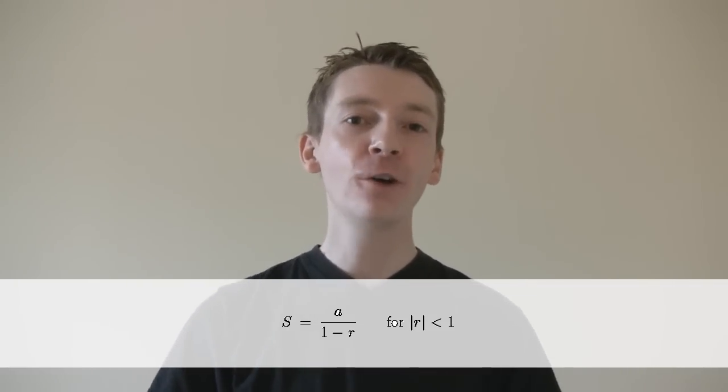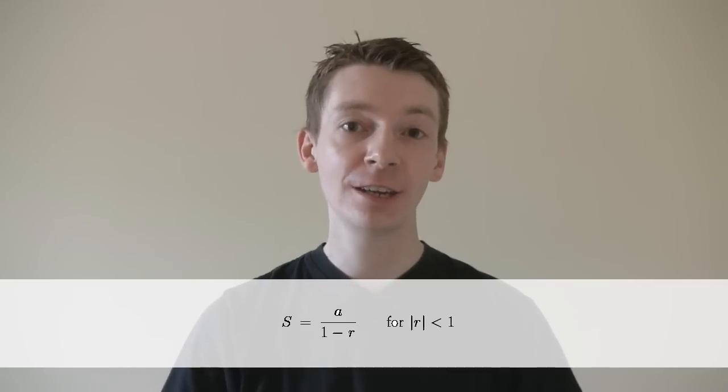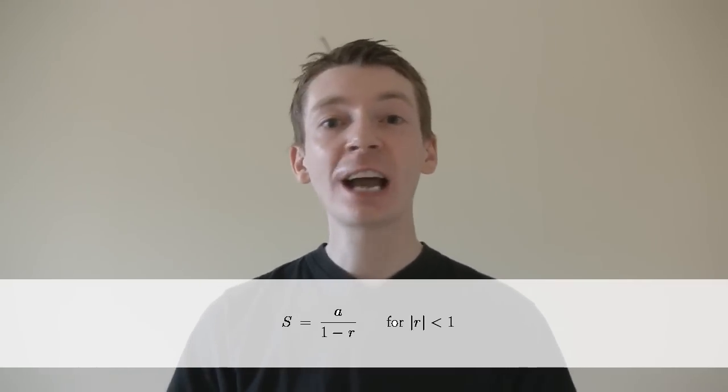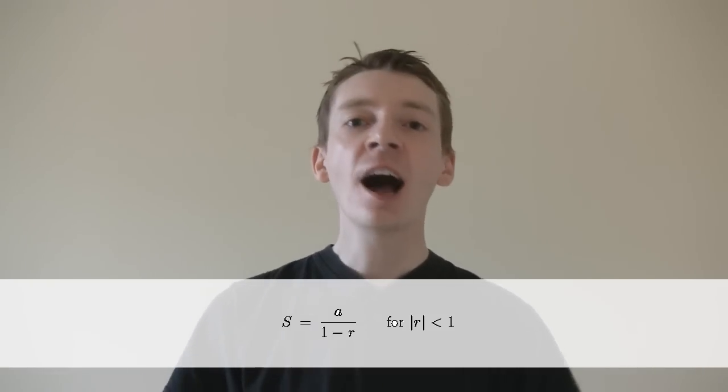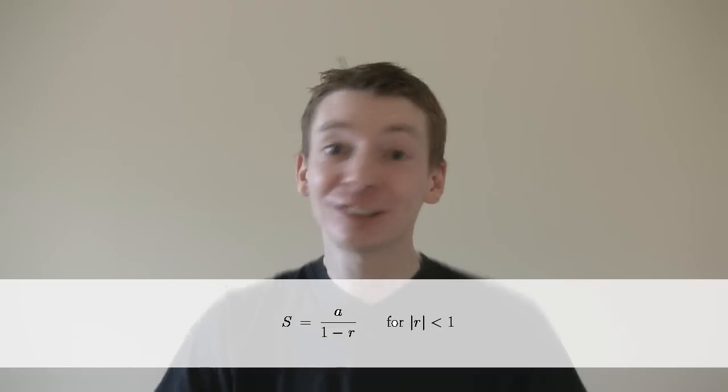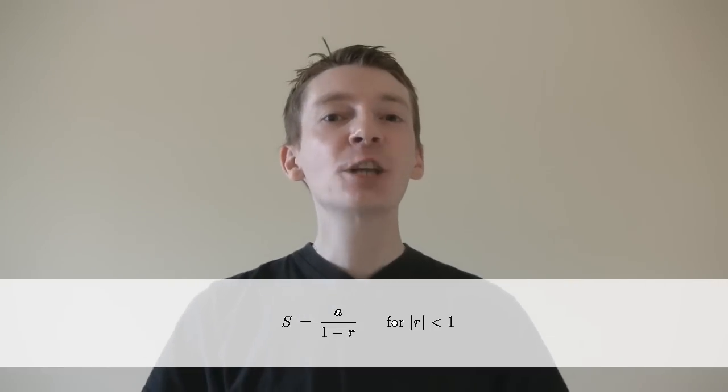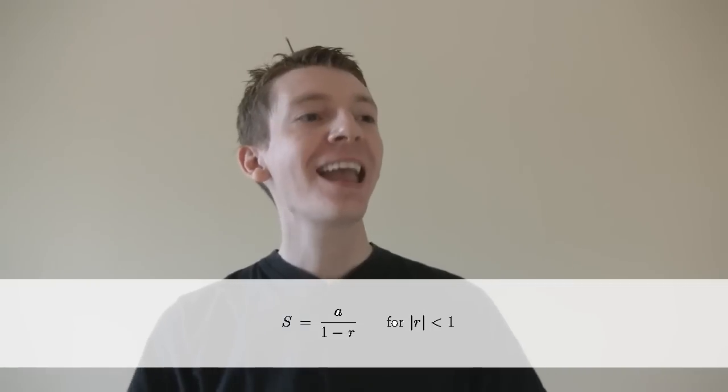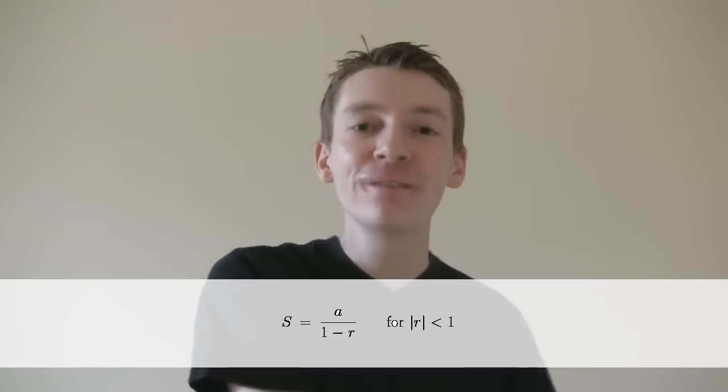When you apply the formula to divergent series, you get a value. So when I applied it, when the common ratio was 2, and it was doubling each time, I got the value minus 1. Now, that's not the limit, because the limit doesn't exist. It's what the limit would be if it was a convergent series.